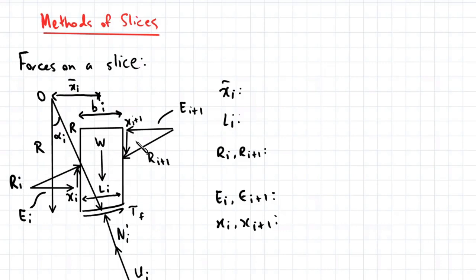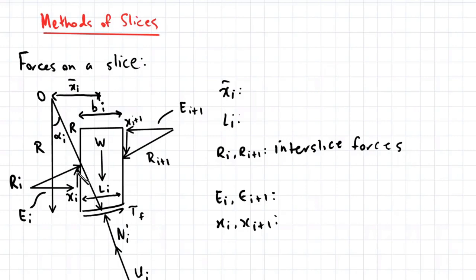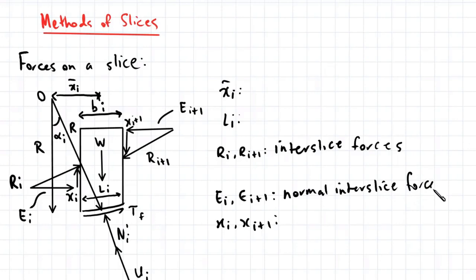These inter-slice forces are represented by the term R, and they can also be broken up into their horizontal and vertical components. E corresponds to the normal inter-slice forces, and X corresponds to the tangential inter-slice forces.